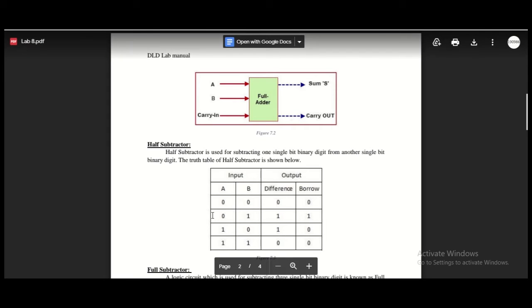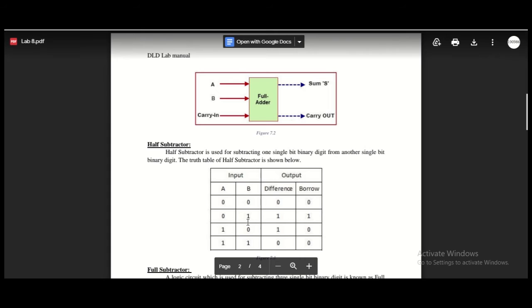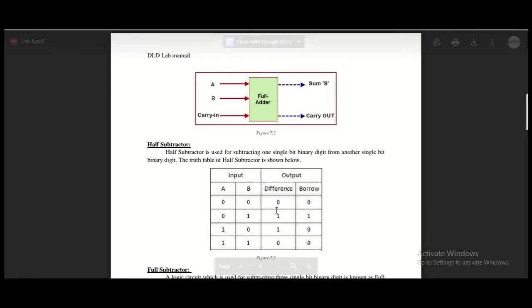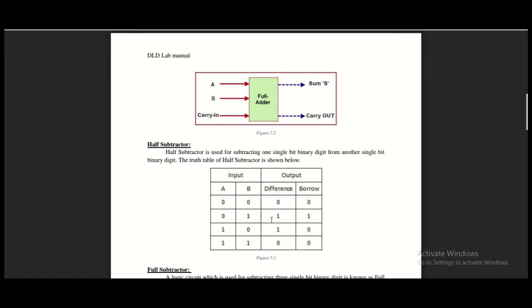In the other inputs, we do not need a borrow. When the input is zero zero, the difference is zero — we don't need a borrow. When the input is zero one, zero minus one is not possible, so we get a borrow and then we subtract to get a difference of one.